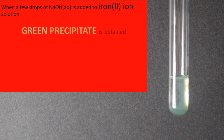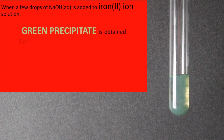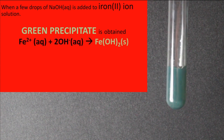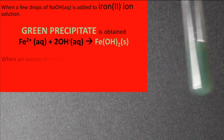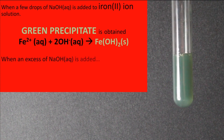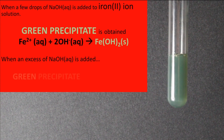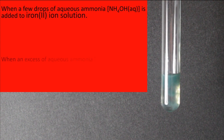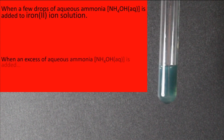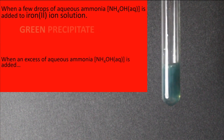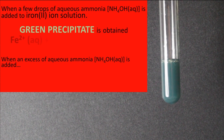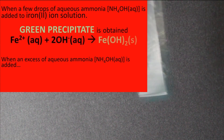Iron 2 ions give a green precipitate with aqueous sodium hydroxide, and this precipitate is insoluble in excess sodium hydroxide. Iron 2 ions give a green precipitate with aqueous ammonia, and this precipitate is insoluble in excess aqueous ammonia.